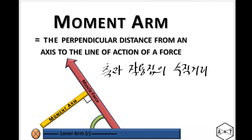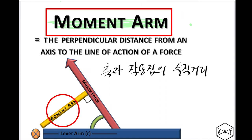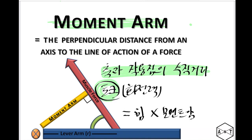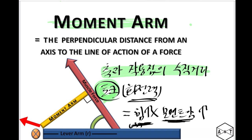스쿼트에 대해서 자세히 알아보기 위해서는 먼저 역학에 대해서 아셔야 되는데요. 그 중 모멘텀이라는 개념에 대해서 아셔야 됩니다. 모멘텀이란 축과 작용점의 수직거리를 모멘텀이라고 얘기를 합니다. 그리고 토크란 회전력을 뜻합니다. 이 회전력은 모멘텀과 힘을 곱한 값으로써 모멘텀이 커지거나 힘이 커졌을 때 회전력이 강하게 됩니다.